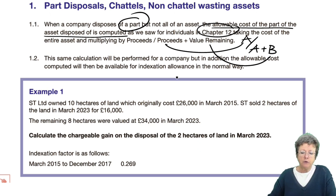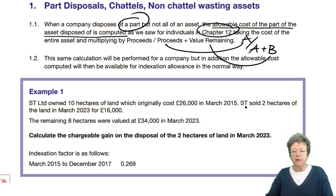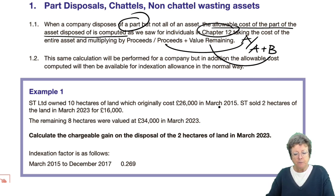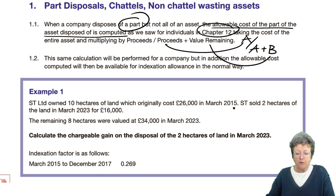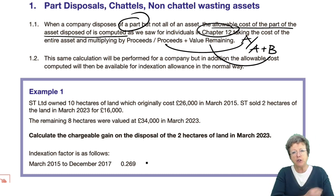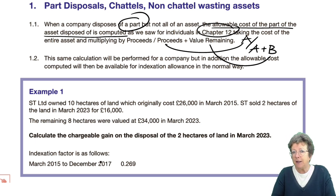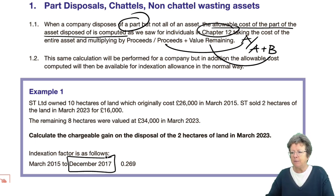So example number one, just as a recap, and to include the indexation: ST owns 10 hectares of land which originally cost £26,000 in March 2015. ST sold two hectares of the land in March 2023 for £16,000, and the remaining eight hectares were valued at £34,000. What is the gain on those two hectares? You've got an indexation factor there. Make sure you don't go past December 2017 — that is where indexation ends.